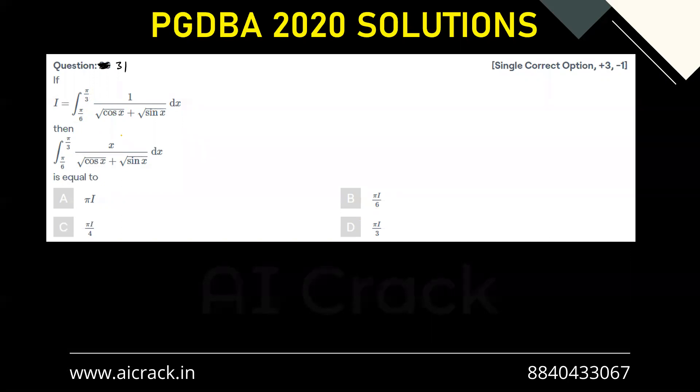So this is again a very standard problem. We know that the limits, the summation of limits is pi by 2 and the denominator is quite favorable.